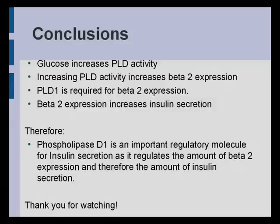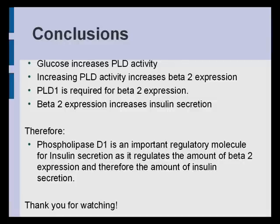Based on the results obtained, it is reasonable to conclude that PLD1 activity increases whenever there is an increase in glucose. This in turn causes an increase in beta-2 expression, which in turn increases insulin secretion, thereby decreasing the blood glucose level to a normal level and thus decreasing PLD activity. This makes PLD1 an important regulatory enzyme in insulin secretion. Without PLD1, it is not possible to regulate the expression of beta-2 effectively, and therefore the cell cannot react appropriately to an increase in blood glucose concentration. We hope you have enjoyed this presentation and thank you for watching.